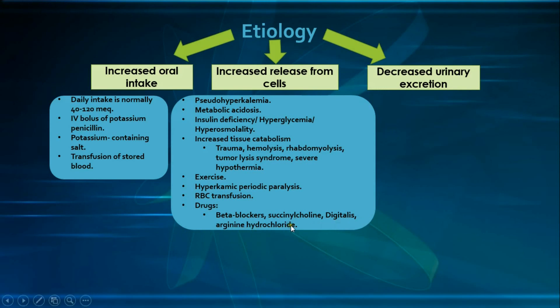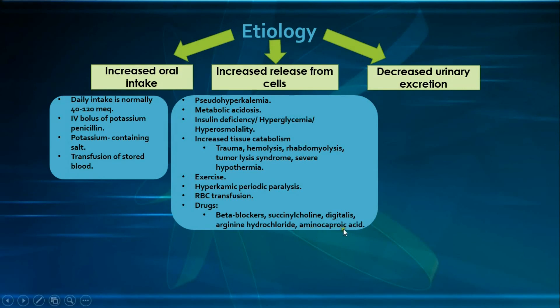Arginine hydrochloride, used to treat metabolic alkalosis, is metabolized in part into hydrochloric acid (HCl) and arginine. HCl treats the alkalosis, while arginine shifts into the cells replacing the potassium — therefore potassium is kicked out of the cells to maintain electroneutrality, causing hyperkalemia. The same mechanism applies to aminocaproic acid, used in acute bleeding disorders, because aminocaproic acid is structurally similar to arginine and lysine and shifts into the cells as a cation, replacing the potassium.